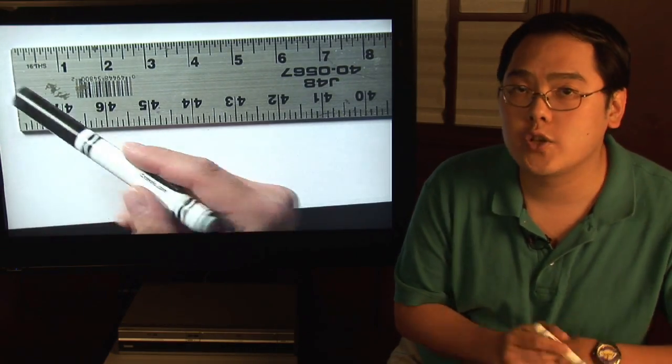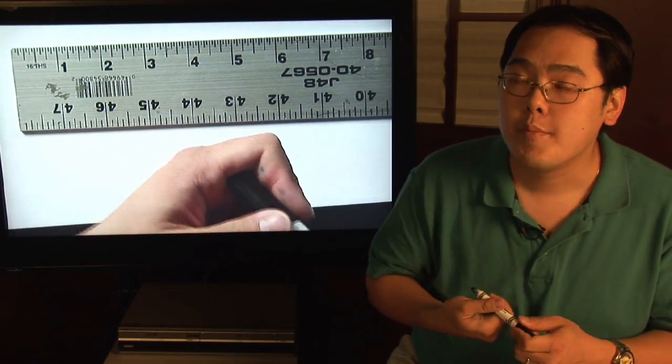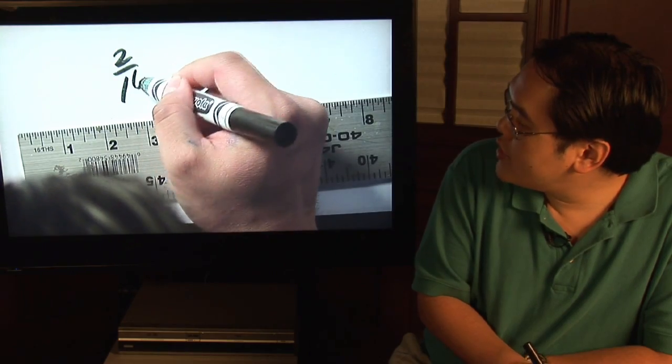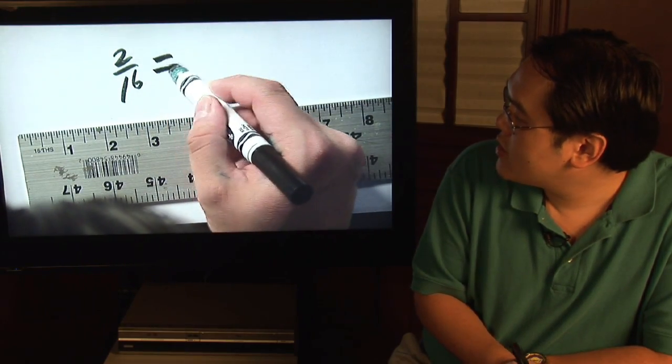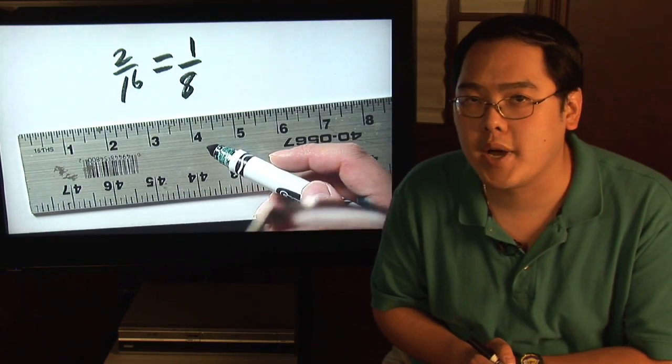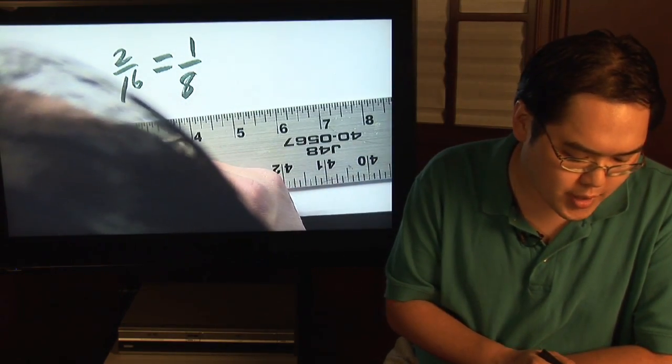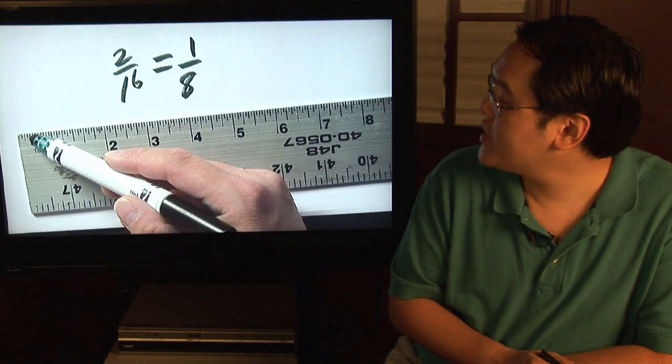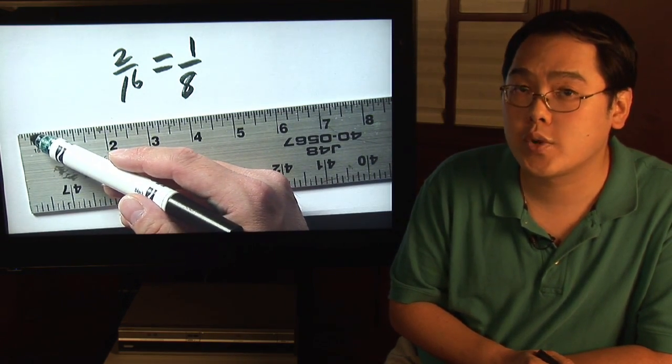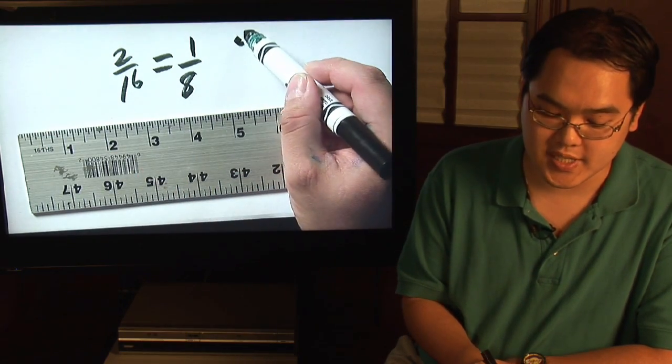Now the tick that follows that is going to be two sixteenths, but as we had discussed before, you can reduce two sixteenths to one eighth because you can reduce both the top and bottom by two. From that point on, you have three sixteenths, the fourth tick is four sixteenths, but three sixteenths wasn't reducible, but four sixteenths is.